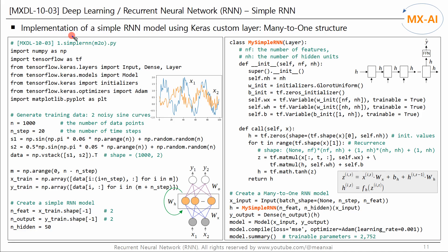Now, let's create a recurrent layer with Keras' custom layer and implement a many-to-one RNN model. We'll generate two sine curves with different frequencies mixed with Gaussian noise. Each curve consists of 1,000 data points, making this data a 1,000 by 2 matrix with two features, X1 and X2, where each column vector is a sine curve.